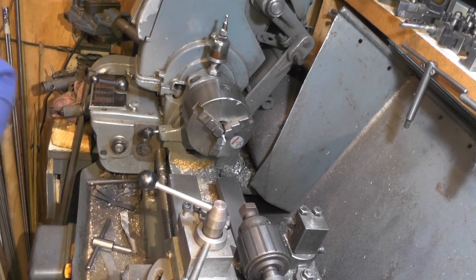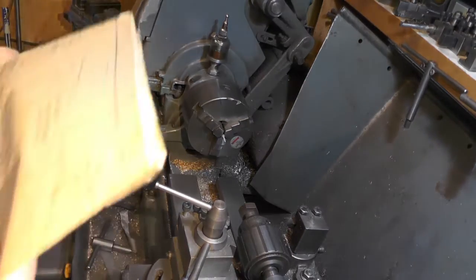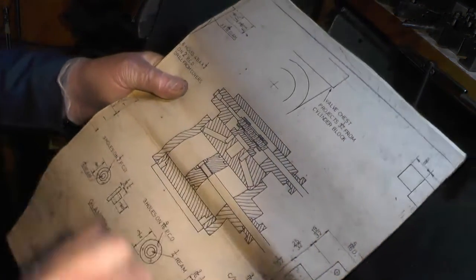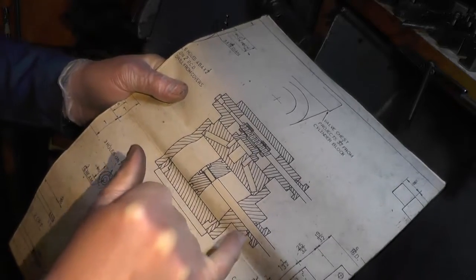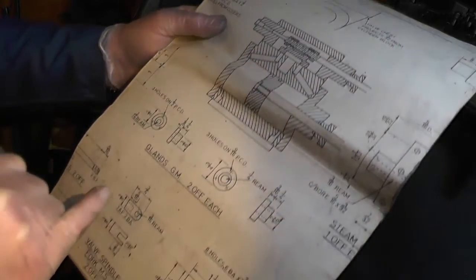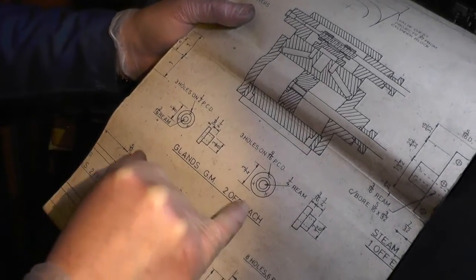I'm over at my Myford lathe at the moment and today I'm concentrating on making a few of the ancillary components for the valve chest and the cylinder covers. These components I'm doing are the glands and there's two off of each, obviously one for each side.